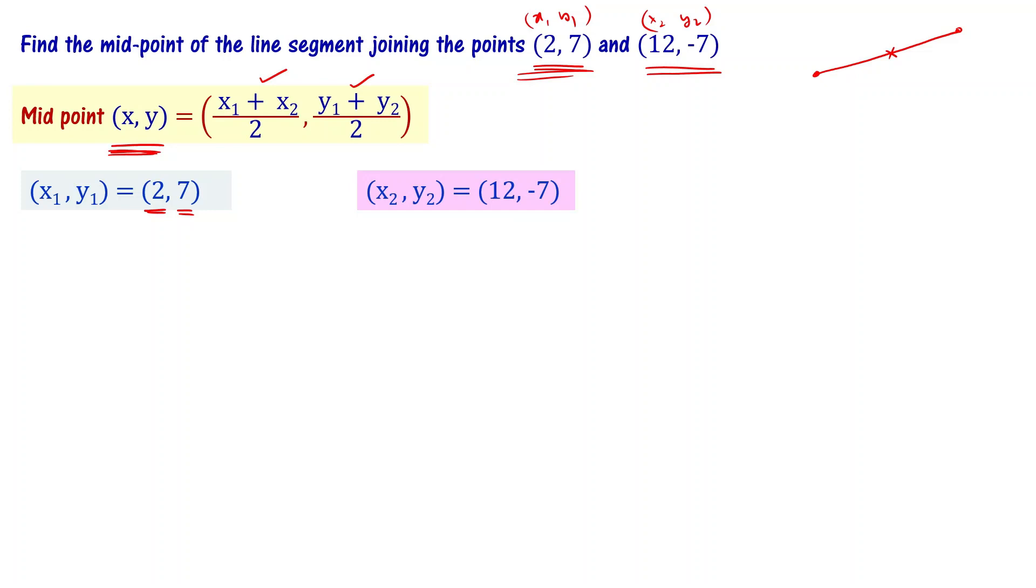x2,y2 equal to (12,-7) so x2 is 12 and y2 is minus 7. Now let us substitute these values into this. The midpoint (x,y) equals x1 that is 2 plus x2 that is 12 divided by 2, and y1 plus y2 divided by 2. So, 7 plus minus 7 divided by 2. This is 14 by 2 and this is 0 by 2.